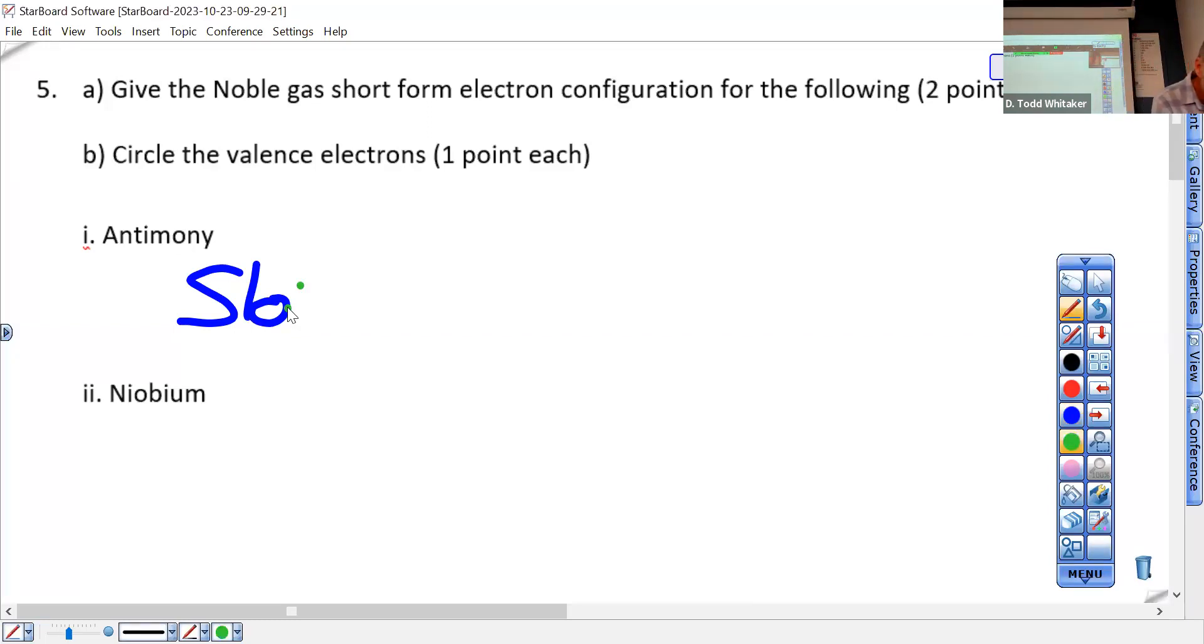So what you do is you write down, don't put it in green though, square bracket Kr. You are now at the end of the fourth row. As soon as you wrote that, you've accounted for every electron to get up to Kr, end of fourth row. So moving on to the fifth row, 5s2.